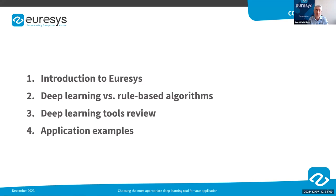After a very short introduction about the Uresys company, I will make a comparison between the conventional rule-based algorithm method and the deep learning approach. We will then review tools such as segmenters, classifiers, and object detectors, focusing mainly on the advantages and drawbacks. We will explain, based on some examples, how these tools meet typical requirements of computer vision applications and how to choose between them.